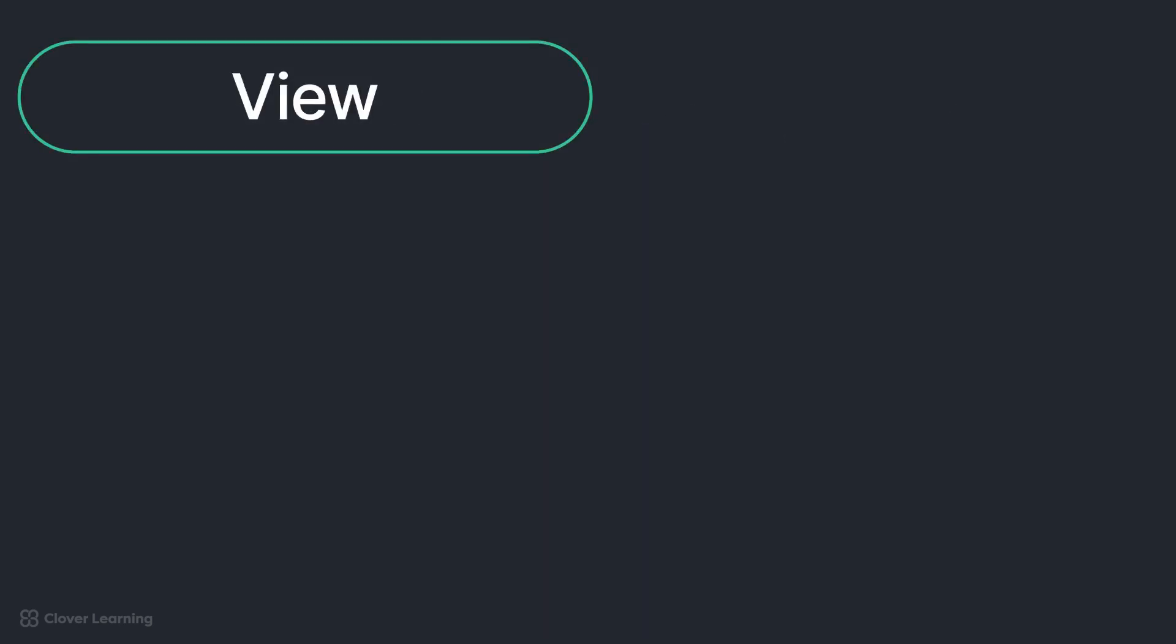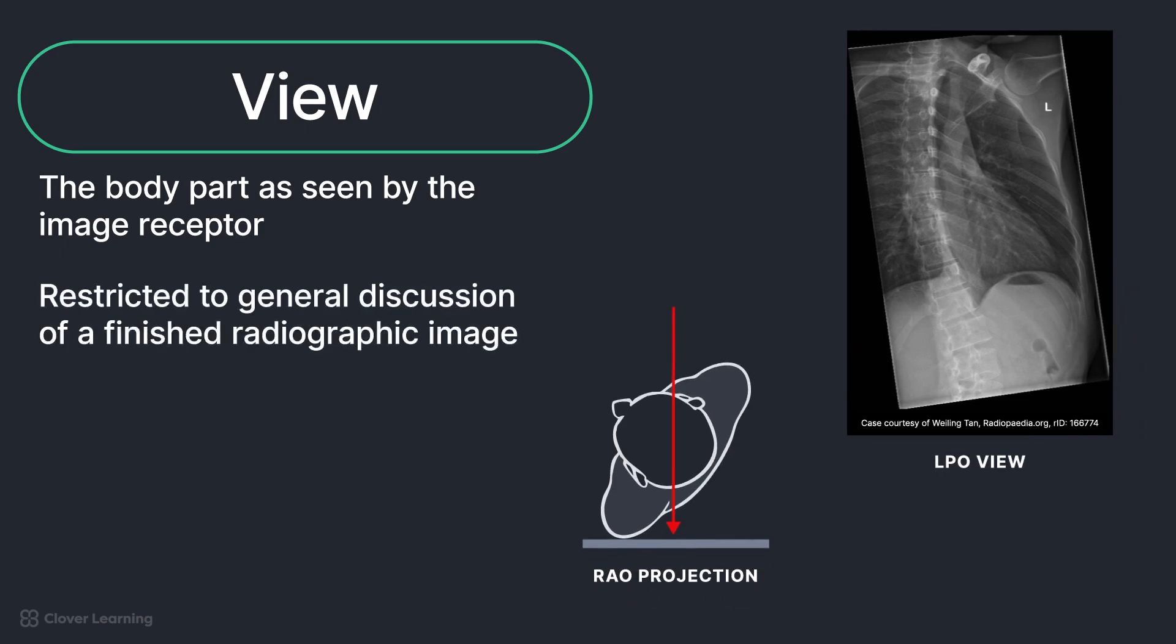View is used to describe the body part as seen by the image receptor and is restricted to the general discussion of a finished radiographic image. View and projection are exact opposites. View is often used interchangeably with other terms incorrectly. Technologists may also see the word view on an order in clinical practice, such as a three-view wrist. This should be interpreted as three separate radiographic projections or positions as defined by department protocol.